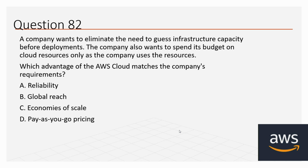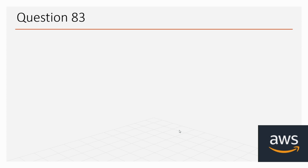Question number 82: A company wants to eliminate the need to guess infrastructure capacity before deployments. The company also wants to spend its budget on cloud resources only as the company uses the resources. Which advantage of the AWS cloud matches the company's requirements? Options: A. Reliability, B. Global Reach, C. Economies of Scale, D. Pay-as-you-go Pricing. The correct option is D, Pay-as-you-go Pricing.